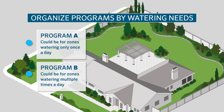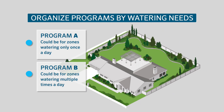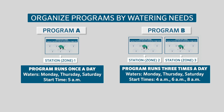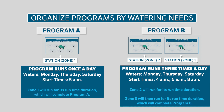Another reason to separate stations into programs would be if some zones need to be watered only once a day and other zones need to be watered multiple times a day. Each program can have a different number of start times. The start time is the time when the program will initiate the watering cycle. You can have a program water up to four times per watering day. Each start time causes all stations within a program to run a complete cycle in sequential order.